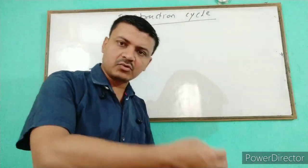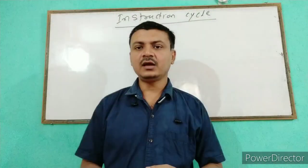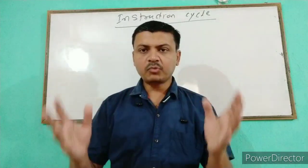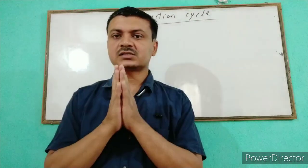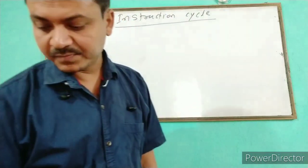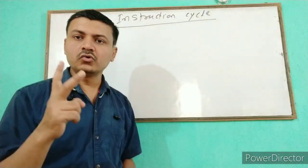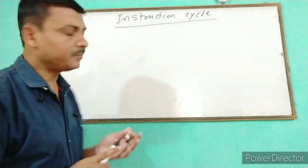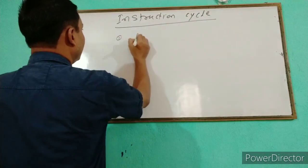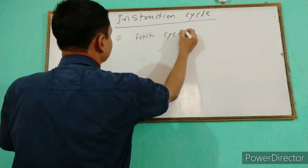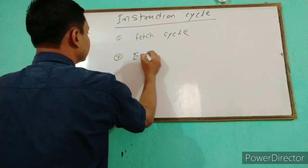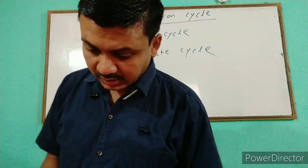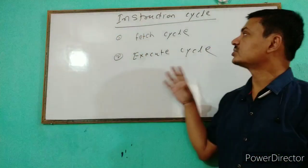So the CPU fetches the instruction from the memory and after doing so, it will execute the instruction. The whole instruction cycle is divided into two parts: one is the fetch cycle and the other is the execute cycle.